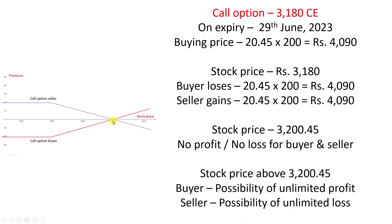The breakeven price is 3200.45 — we call it the breakeven price. Above 3200.45, whatever the price may be — whether it reaches 3300 or 400 or 500 — the possibility of profit for the buyer is unlimited, and the possibility of loss for the seller is unlimited. This is what happens if you buy an option or sell an option and hold it till expiry.